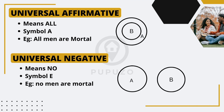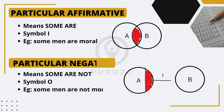Moving on, we have the particular affirmative proposition, denoted by the symbol I. This proposition asserts that at least some part of the subject belongs to the predicate. For instance, the proposition 'some men are moral' implies that there exists a subset of men who possess moral qualities.